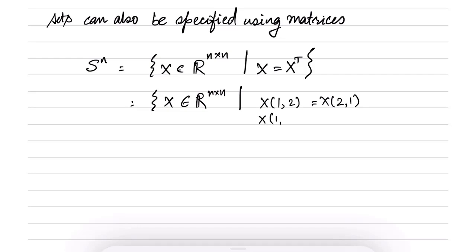Likewise X(1,3) is equal to X(3,1) and so on. So this is another way of writing the same set. Now observe here that what is this? What kind of equation is this? This is basically a linear restriction on the entries of x. Essentially, you can write this as a linear transformation of the entries of x equal to 0.